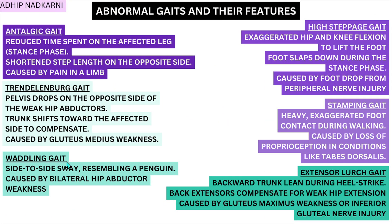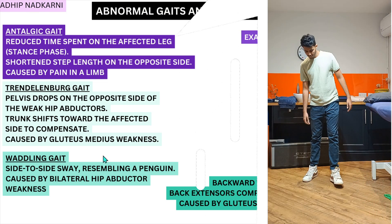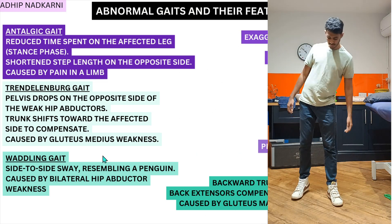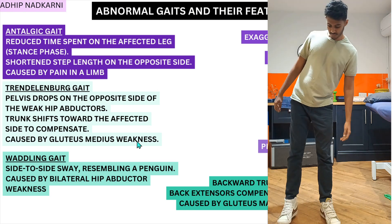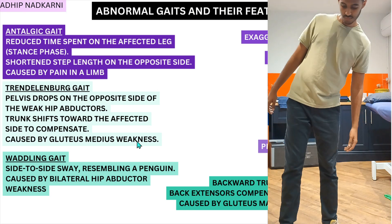Next is waddling gait, where there is a side-to-side sway of the trunk resembling a penguin. The cause is usually bilateral weakness of the hip abductors. It is very similar to the Trendelenburg gait, just a bilateral presentation of it. You can clearly see the side-to-side trunk sway because of the inability of the hip abductors to stabilize the pelvis.